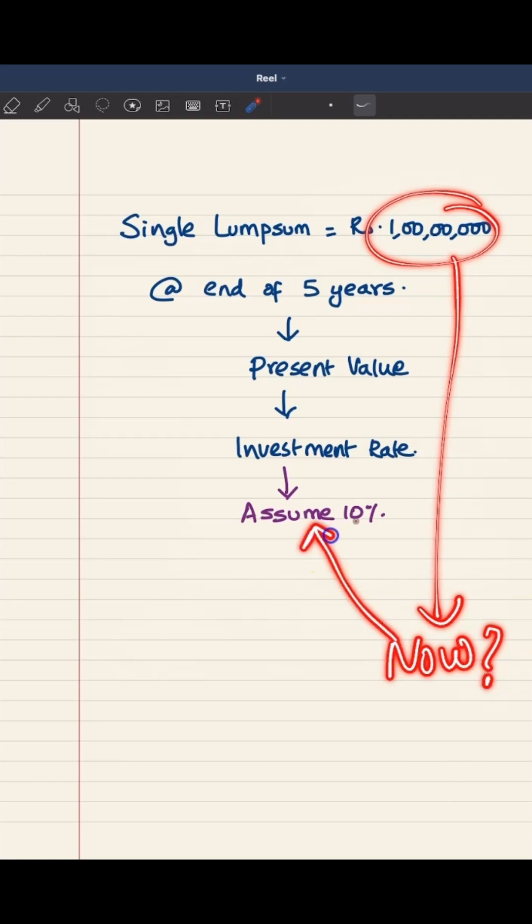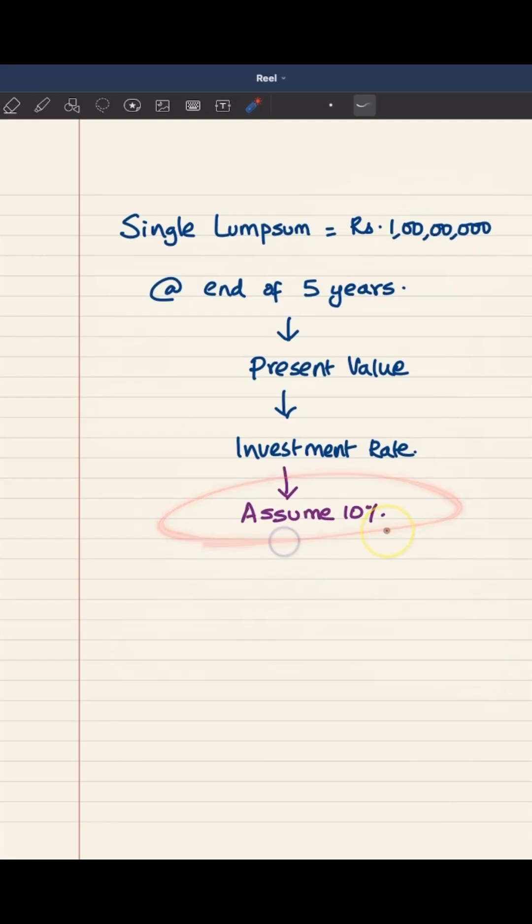So let us assume you can invest it at 10%. And how do I say this 10%? Let's say banks are offering 10% return on deposits, or let's say there are some debentures, some bonds where I can invest for 10%. So that is the minimum risk-free return. Then easily I can find out the present value.